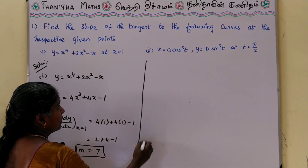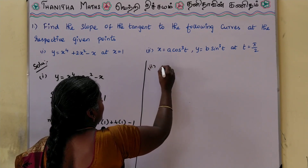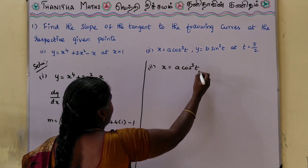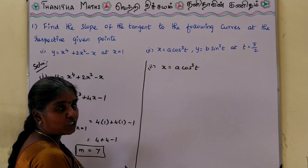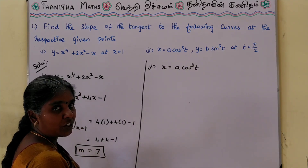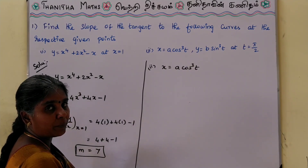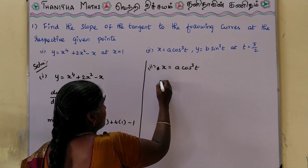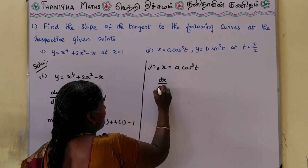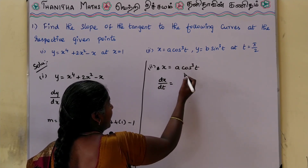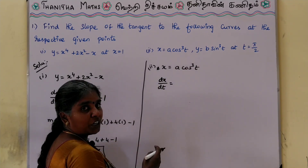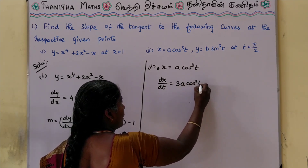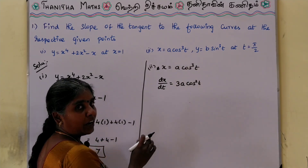Next, the second problem uses the same method. This is a parametric formula. Using the parametric formula, we differentiate x is equal to a cos cube t with respect to t. We treat cos cube t like x cube format. So, dx by dt gives 3a cos square t.